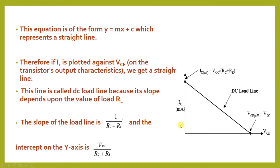With IC on the Y-axis and VCE on the X-axis, if IC is plotted against VCE on the transistor's output characteristic curve, we get a straight line. This line is called the DC load line because its slope depends upon the value of RL.